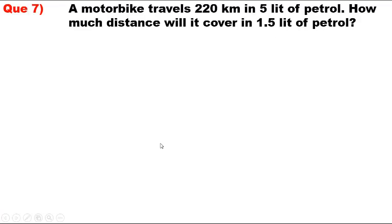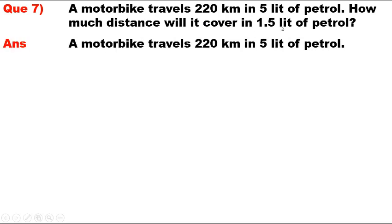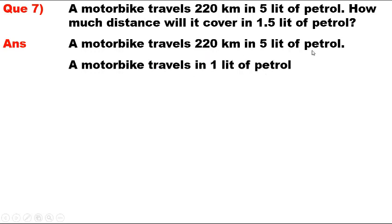Question 7. A motorbike travels 220 km in 5 litres of petrol. How much distance will it cover in 1.5 litres of petrol? Answer. A motorbike travels 220 km in 5 litres of petrol. Therefore, the motorbike travels in 1 litre of petrol = 220 / 5 = 44 km.